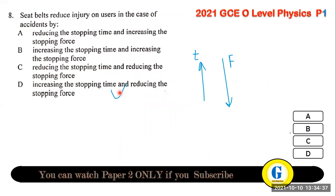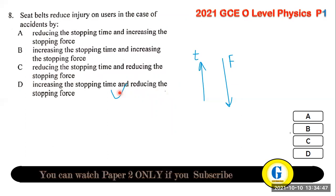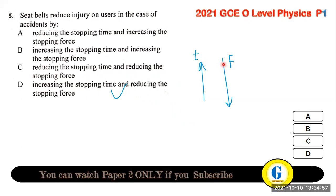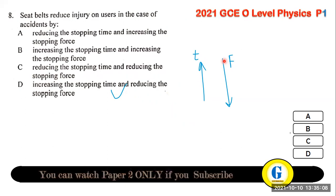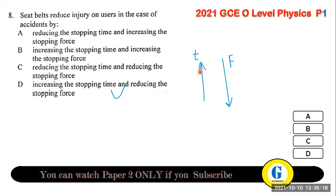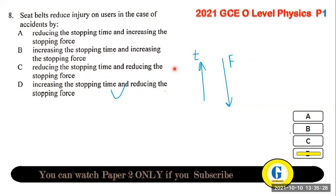Question 8: seat belts reduce injury in accidents by increasing the time to come to rest, which reduces the stopping force. When you take a longer time to come to rest, the impact force is lower. Seat belts increase stopping time and reduce stopping force.